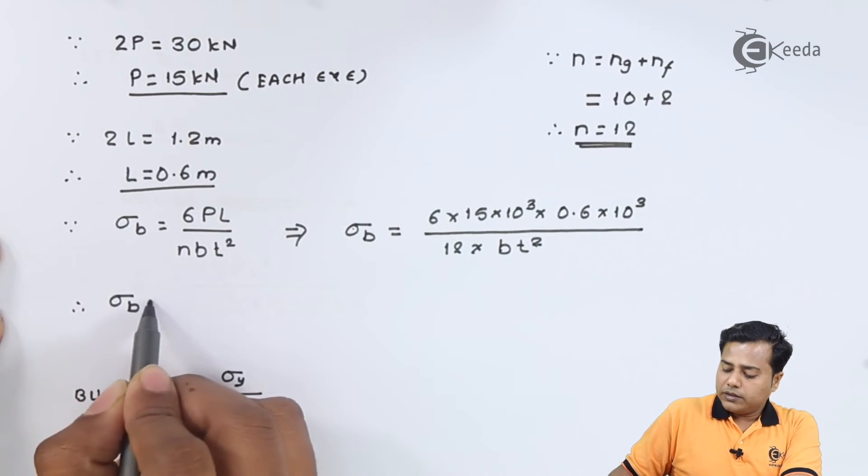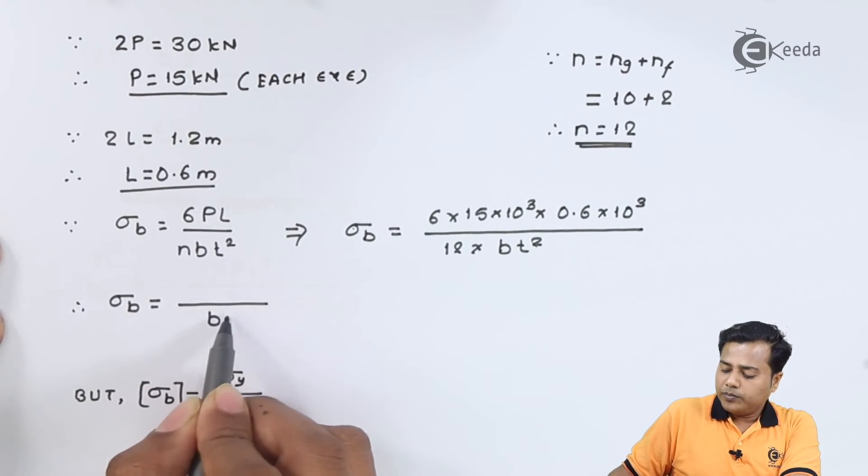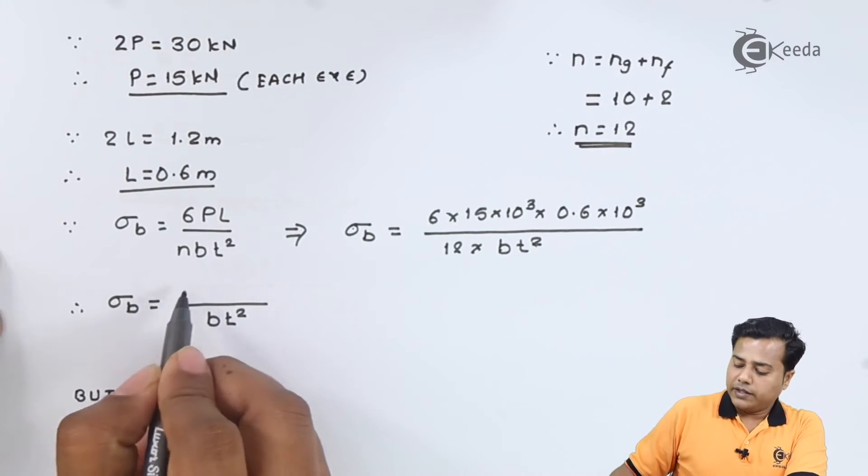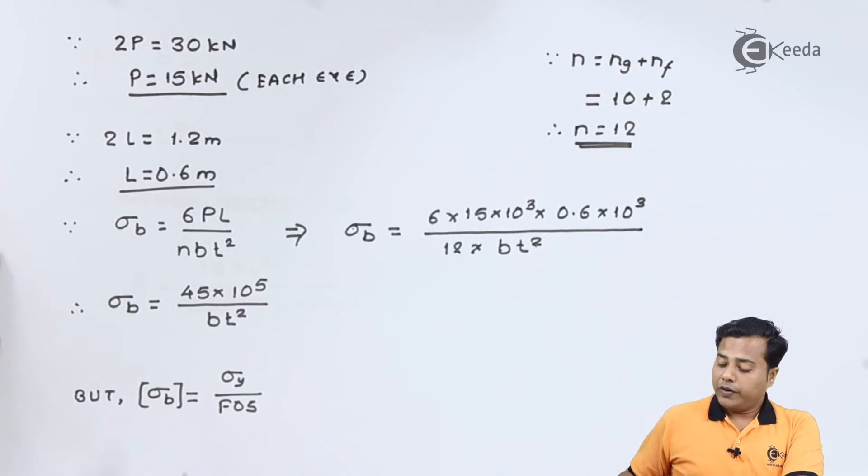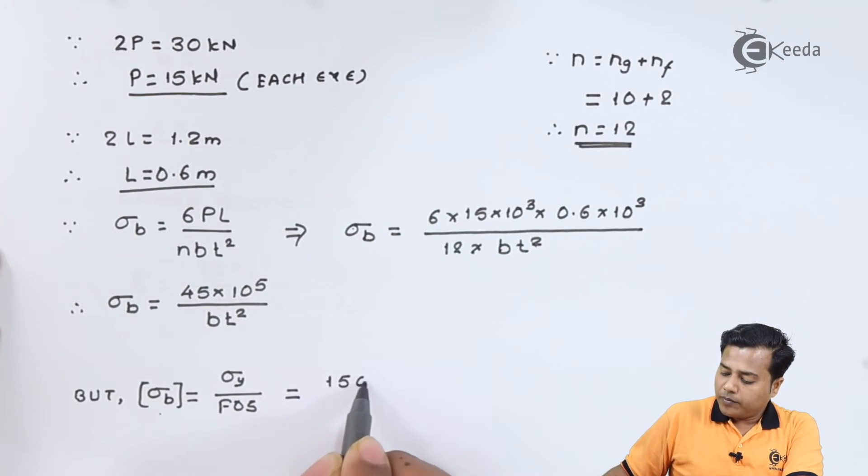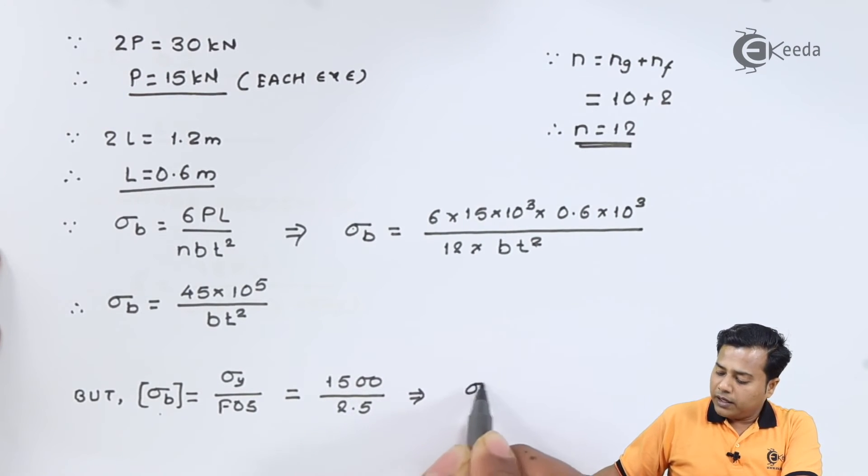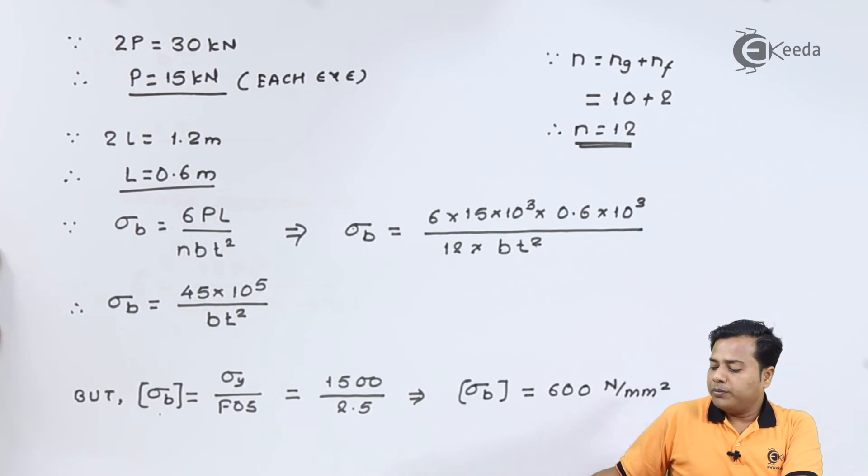Let's solve this particular expression. We have been specified the material and we already know that the value of the allowable stress will be based on the yield stress divided by the factor of safety. The value of bending stress with the factor of safety 2.5 and hence allowable value of bending stress comes out to be 600 Newton per millimeter square.